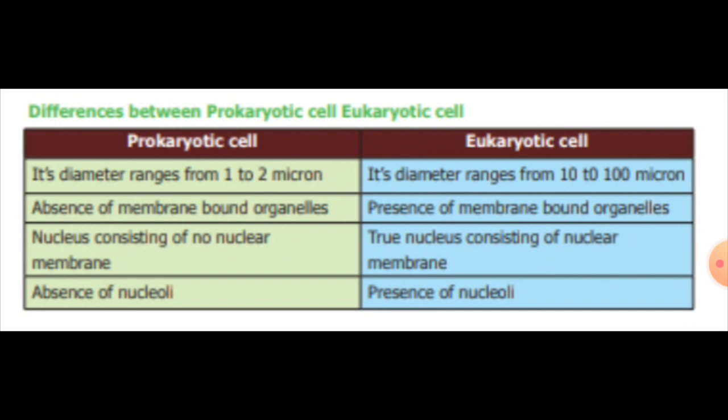The difference between prokaryotic and eukaryotic cells: Prokaryotic cells have a diameter ranging from 1 to 2 microns, while eukaryotic cells have a diameter ranging from 10 to 100 microns. Prokaryotic cells have an absence of membrane-bound organelles, while eukaryotic cells have membrane-bound organelles. Prokaryotic cells have no nuclear membrane — their nucleus is called a nucleoid. Eukaryotic cells have a true nucleus consisting of a nuclear membrane. Prokaryotic cells lack nucleoli, while eukaryotic cells have nucleoli present.